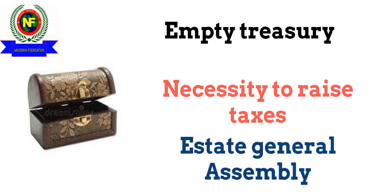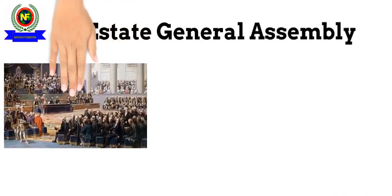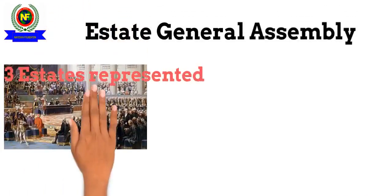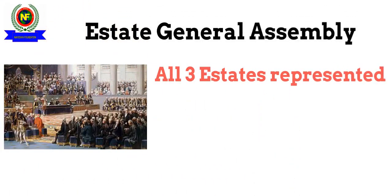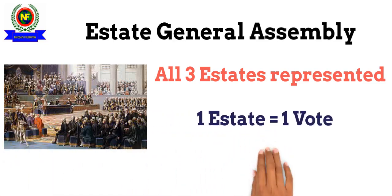Now let us understand the structure of the Estates General Assembly. In this body, all three estates, which we have already discussed, were represented. There was a rule that each estate had a single vote, and a representative of each estate cast a vote on behalf of his estate.